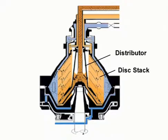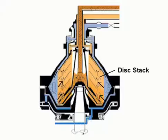When the dirty oil reaches the slots of the distributor, it rises through the channels formed by the disk stack where it is evenly distributed. Dirty oil is continuously cleaned as it travels towards the centre of the bowl.